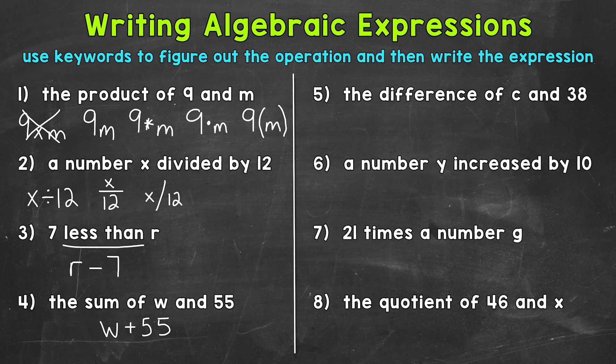On to number 5, where we have the difference of C and 38. 'Difference' is our keyword — it means the answer to a subtraction problem. So this is going to be subtraction: C minus 38. In this case, we keep the order — C first, 38 second — as opposed to number 3, where we switched the order because we had 'less than.' Pay attention to wording when it comes to these algebraic expressions.